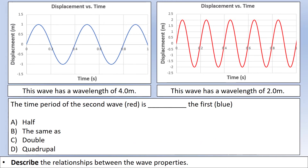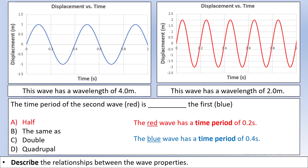Using the same two waves, let's now compare their time periods. Pause the video and select your answer. From the diagram, the red wave has a time period of 0.2 seconds, while the blue wave has a time period of 0.4 seconds — the same wave we looked at before. Therefore the red wave has half the time period of the blue wave.